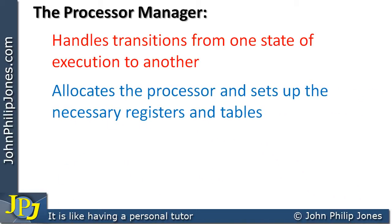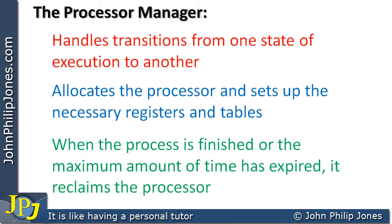The process manager allocates the processor and sets up the necessary registers and tables. These registers and tables are essentially a data structure containing the status of a particular process — there'll be a flag mechanism whereby an area of a table is set to a one if a process is running, or zero if it's in a waiting state, indicating what state each process is in. When the process is finished or the maximum allowed CPU time has expired, the process manager reclaims the processor so another process can have access. Like all managers, the process manager is looking after its own resource — which here is central processing runtime.